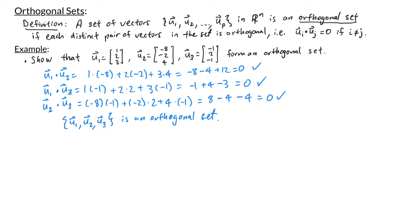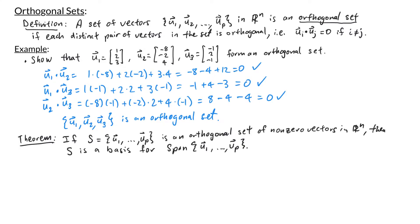Now let's look at a theorem. Suppose we have an orthogonal set of non-zero vectors u1 through up — call this set S. Then S is a basis for the span of the vectors u1 through up.